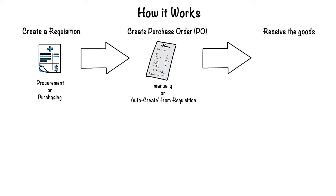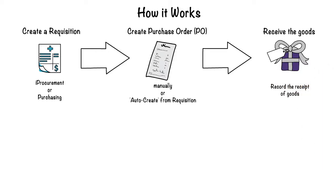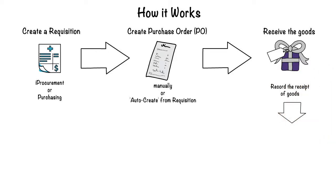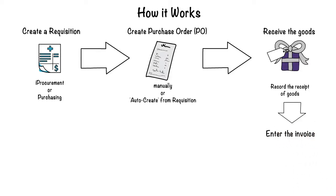Once we have the Purchase Order and once we receive goods, we have to receive the goods in our system. So we would create a receipt for that particular goods. And then once we get the invoice from the vendor, we have to enter the invoice.